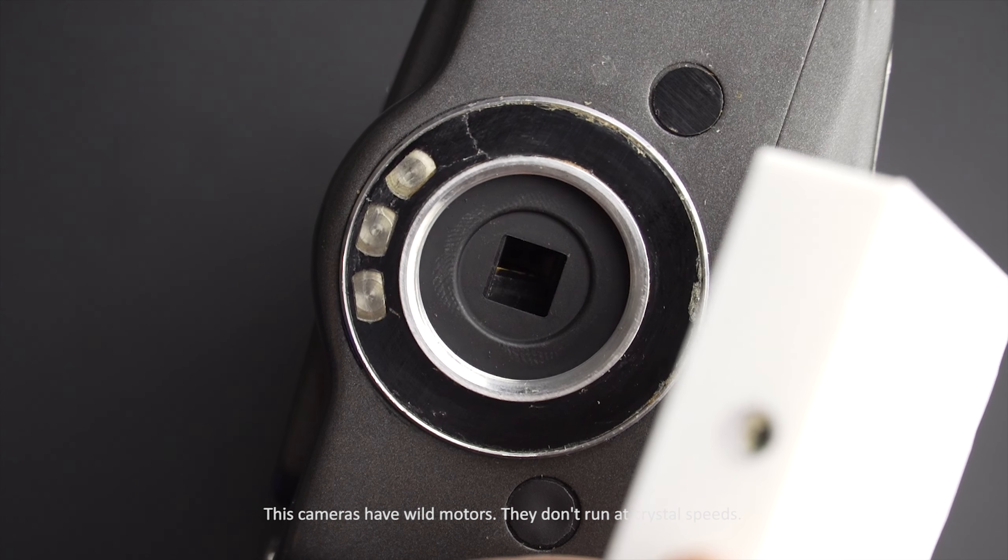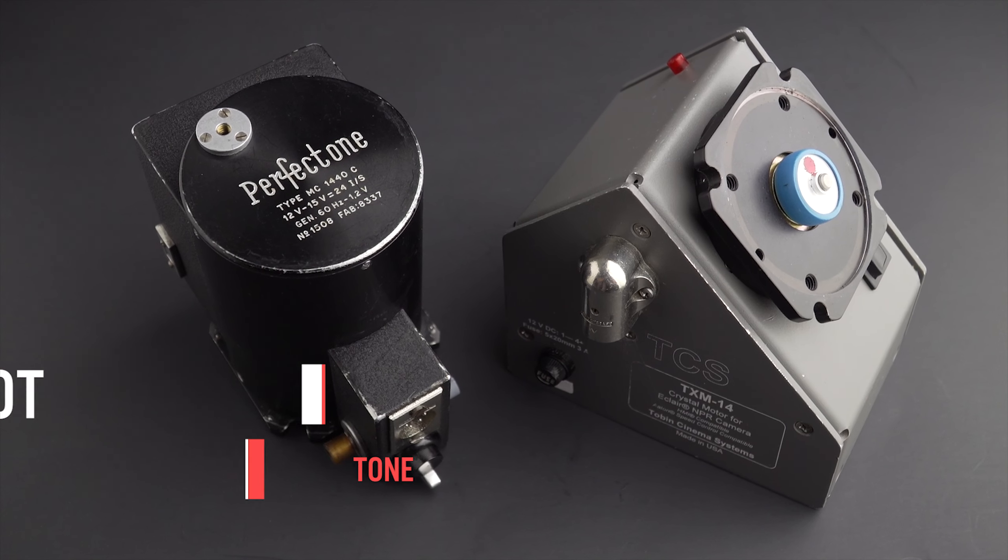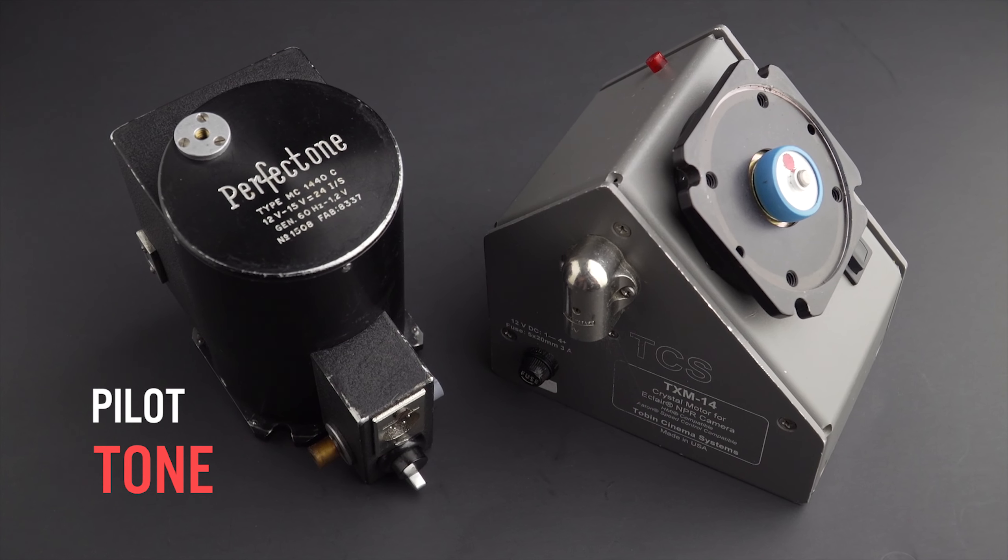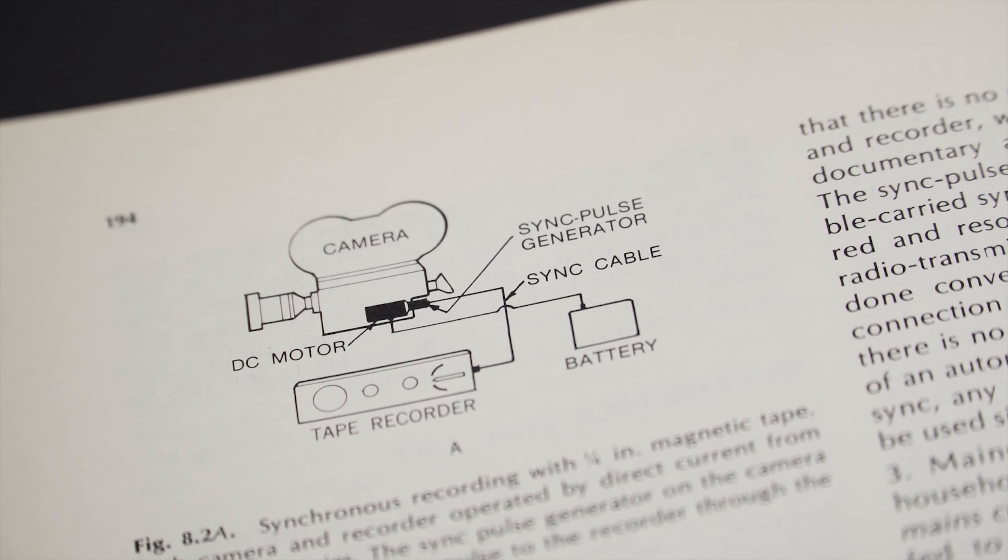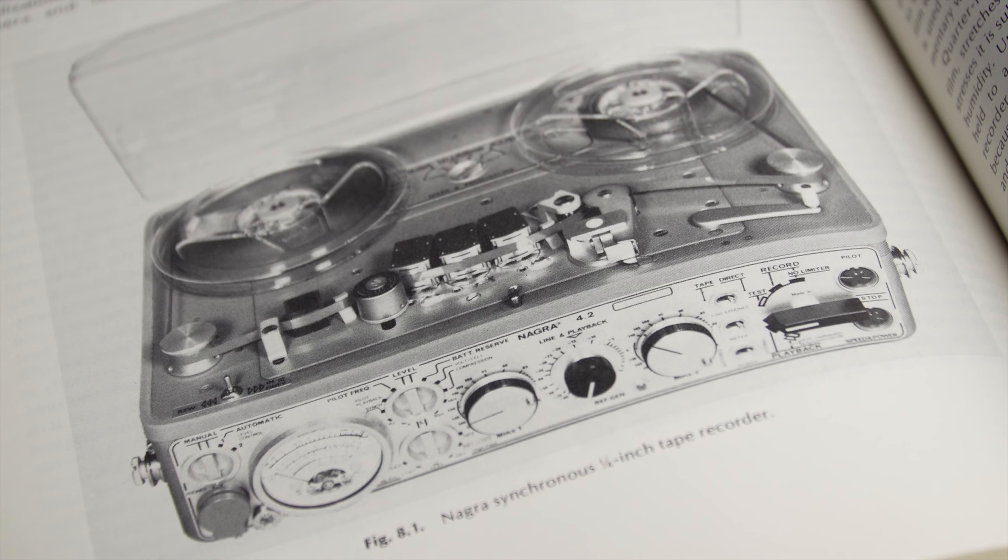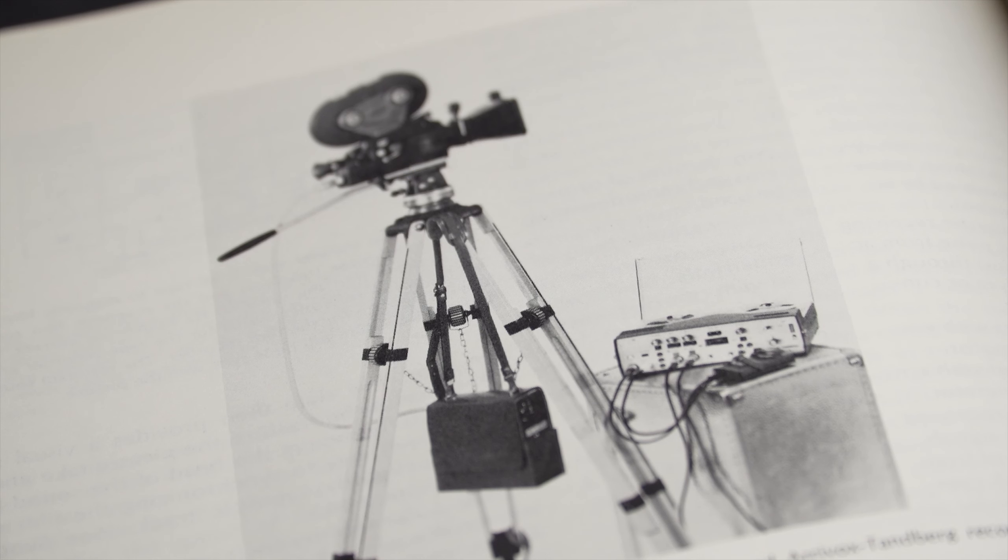Born in the 1950s, pilot tone was a system that used a synchronization signal that was sent from the camera to an audio recorder like the Nagra. The recorder was able to decode those pulses and use the information acquired to record and compensate for changes in the speed of the motor of the camera. The main issue was that the camera had to be attached to the sound recorder with a cable.